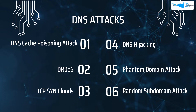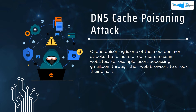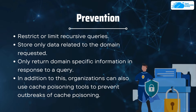Number one on our list is DNS cache poisoning attack. Cache poisoning is one of the most common attacks, and it aims to direct users to scam websites. For example, a user accessing gmail.com through their web browser to check their emails can be redirected to some other hoax website, where their precious data or valuable information can be hacked or leaked.